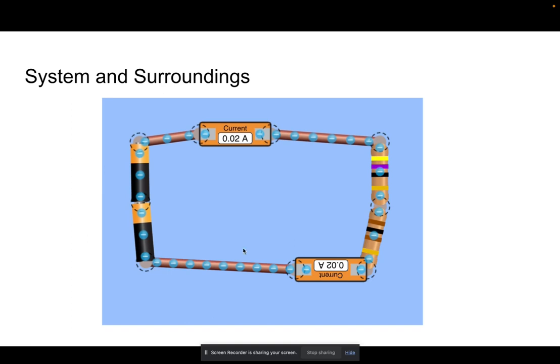System and surroundings: as you can see here, we essentially use batteries, wires, an ammeter, resistors, and a voltmeter, which you will eventually see on another slide.